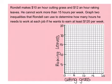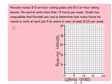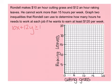For the last example, Rondell makes $10 an hour for cutting grass and $12 an hour for raking leaves. He cannot work more than 15 hours per week. We want to graph the two inequalities that Rondell can use to determine how many hours he needs to work at each job if he wants to earn at least $120 per week. The cutting grass hours are my x values and the raking leaves hours are my y values.